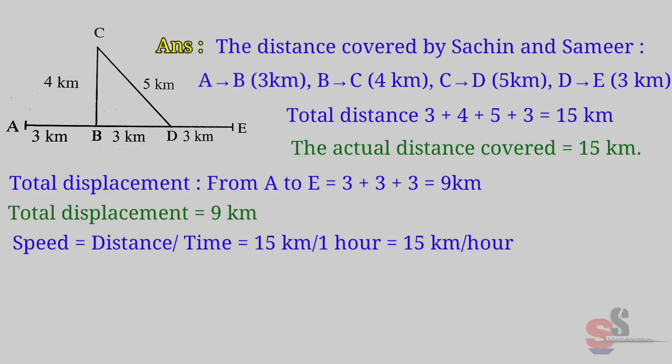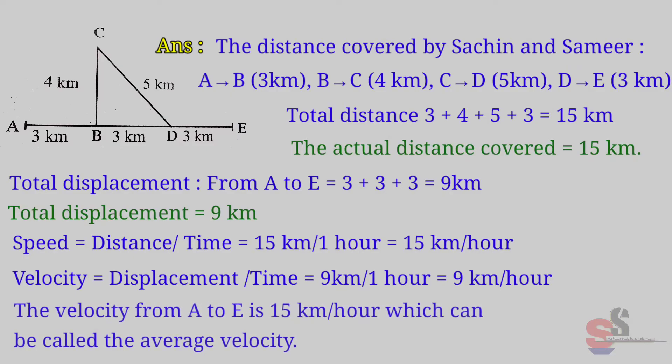Now we will see velocity. Velocity is equal to displacement upon time. Then velocity is equal to 9 km per 1 hour, which is 9 km per hour. The velocity from A to E is 15 km per hour, which can be called the average velocity.